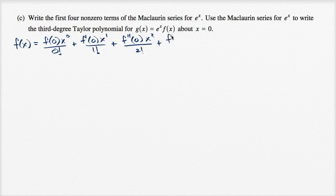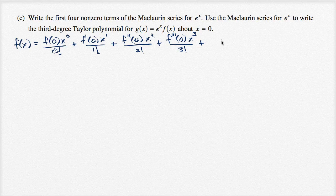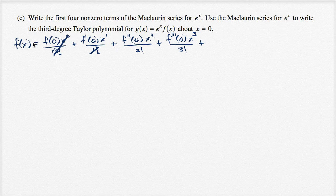Plus the third derivative evaluated at zero times x to the third power over three factorial. I think you see where this is going. The first term — x to the zero over zero factorial — is just one, so it's often written as f(0). And the second term — one factorial is just one — so often written as f prime of zero times x, and so on. Let me just write approximately right over there.